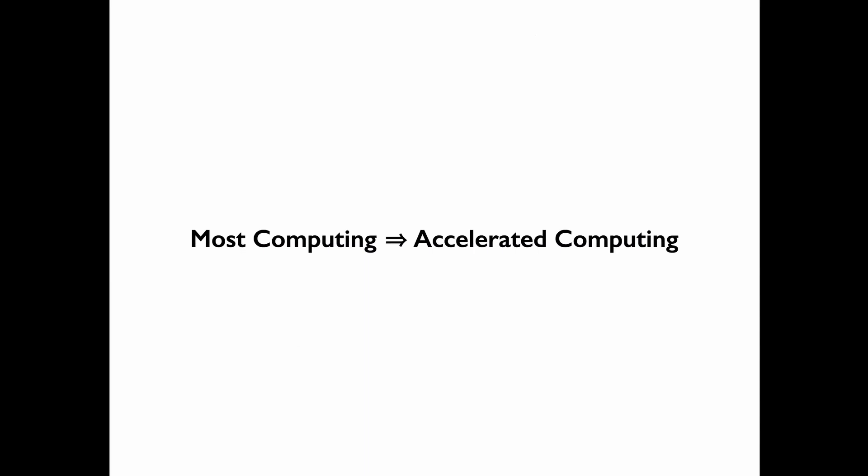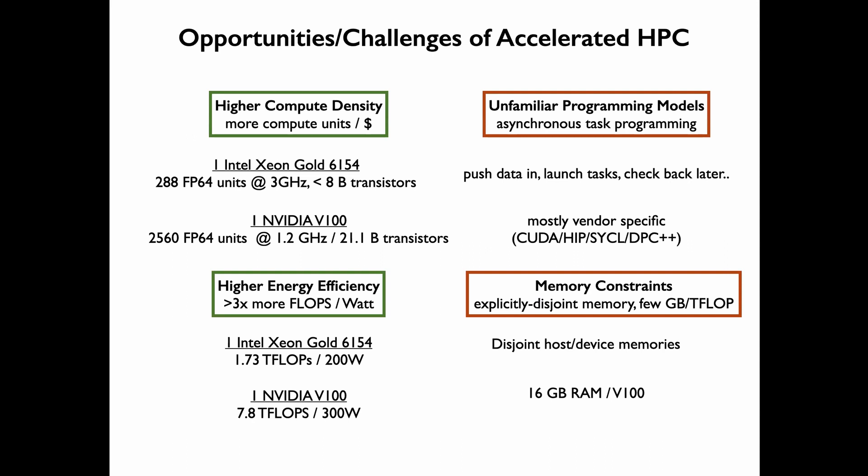So the takeaway is: most computing is becoming accelerated computing. In terms of opportunities, the way to think about accelerated HPC is not really that different — the line has blurred significantly. The introduction of custom or special-purpose hardware is the main distinguishing feature, but in terms of what a GPU is, it's just a multi-core machine. Programming it is very different, and it has its own address space and its own memory.